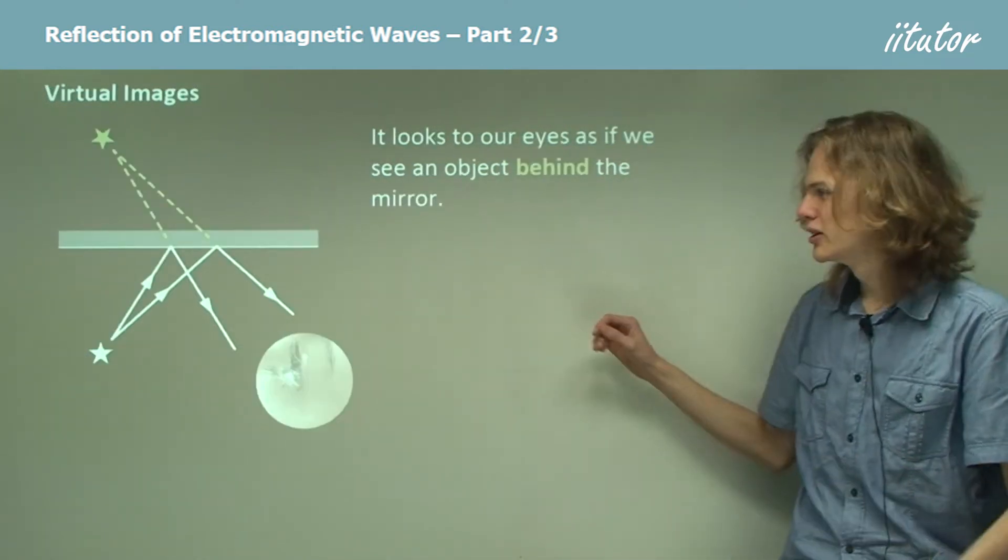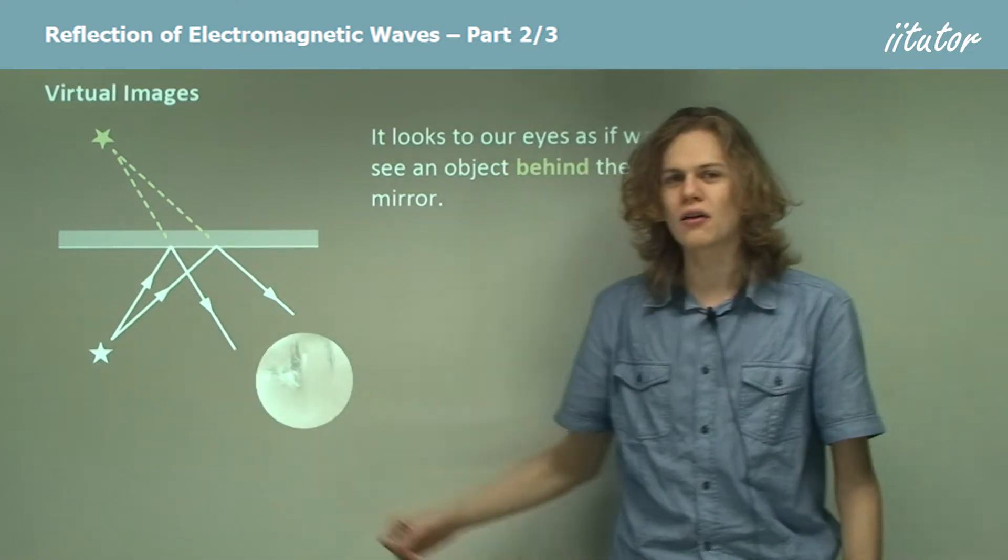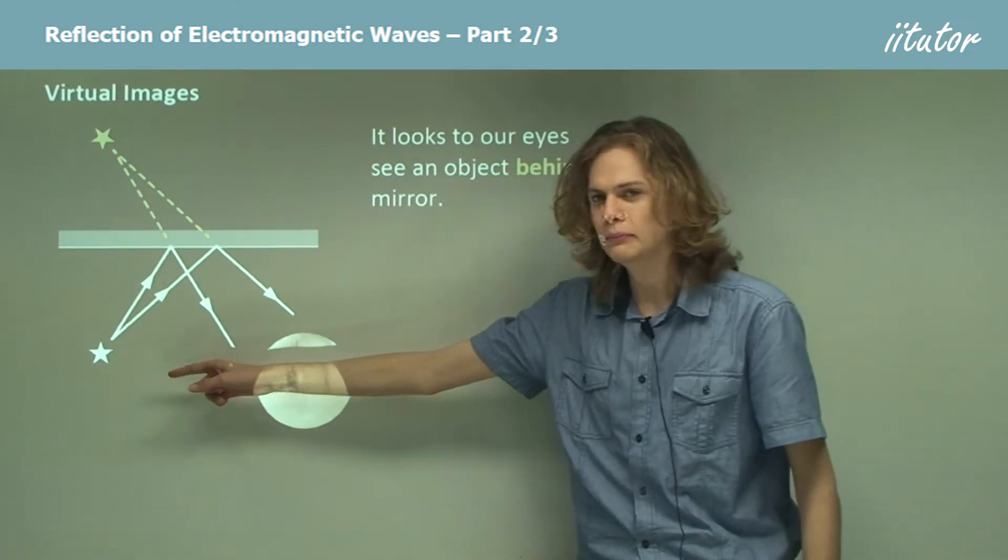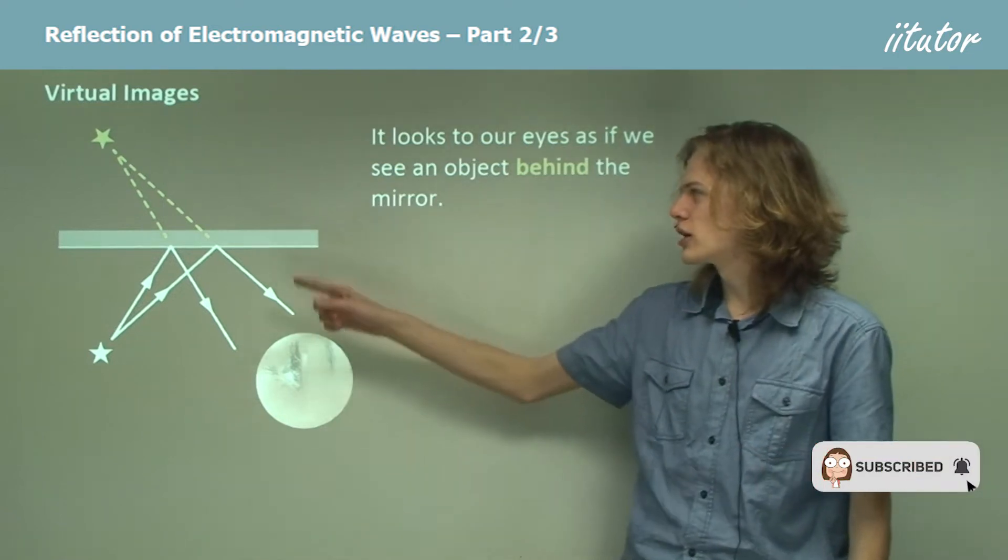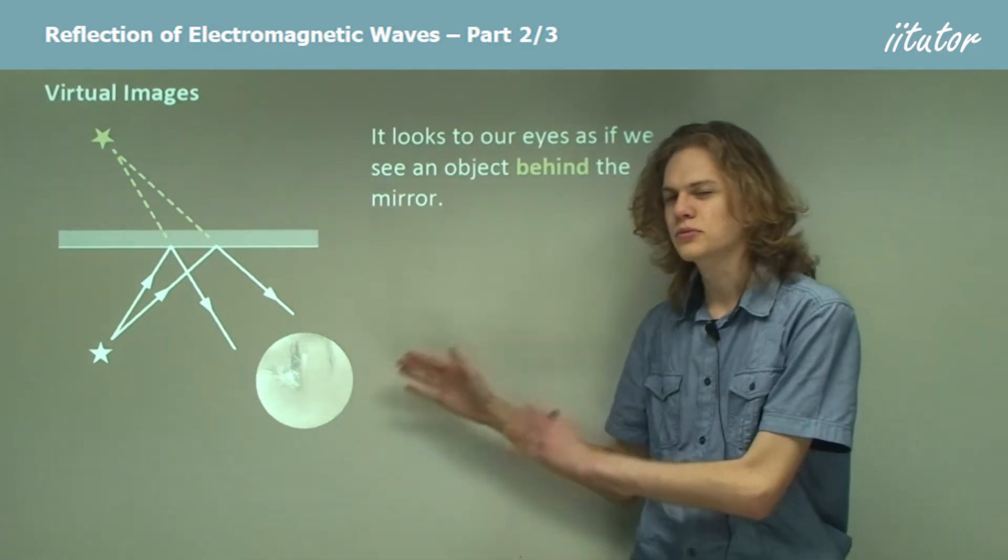Here we go. We can see that in front of the mirror we have a source of light, a little white star, and that light from this source comes up and strikes the mirror. Then it comes and reaches our eye.